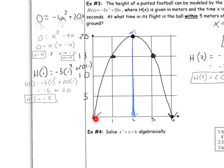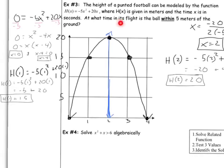Now we know: at 0 seconds, the ball is on the ground — 0 height. After 1 second, it's at 15 meters high. At 2 seconds, it reaches a peak at 20 meters. At 3 seconds, it comes back down to 15 meters. And then at 4 seconds, it hits the ground. We have a really good idea of what's happening to this football. But what do they want us to know? At what time in its flight is the ball within 5 meters of the ground? They want to know about this time here — when is the ball between 0 and 5 meters? So we need to know what the time is right when it hits 5 meters, and what the time is when it comes back down to 5 meters.